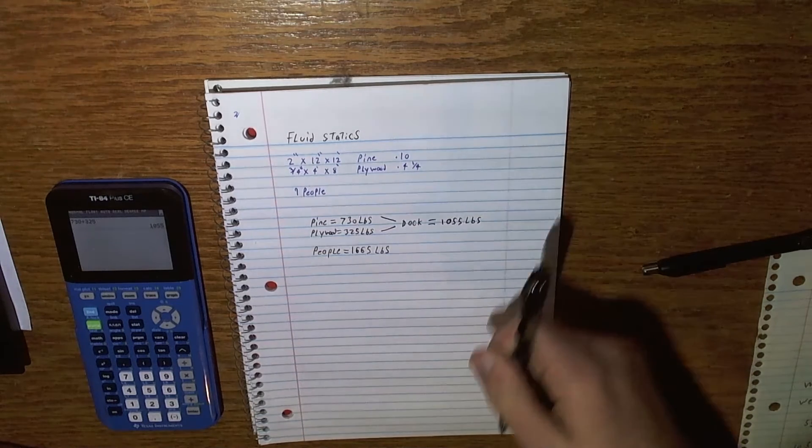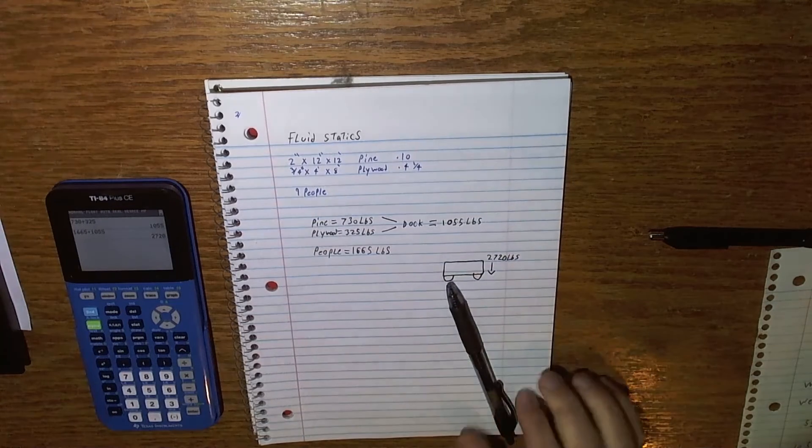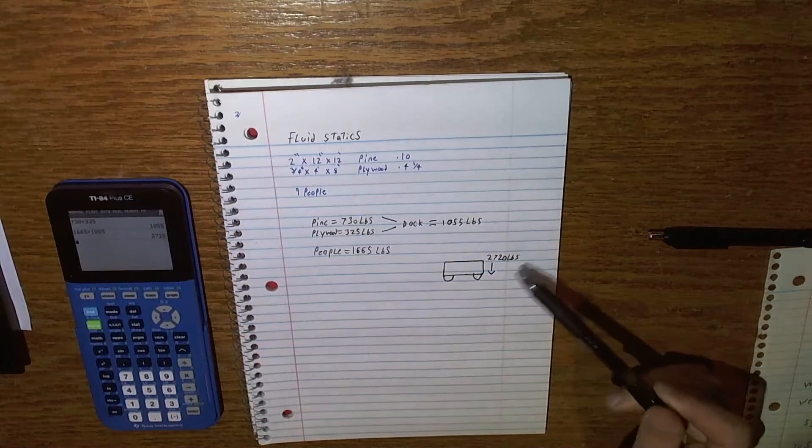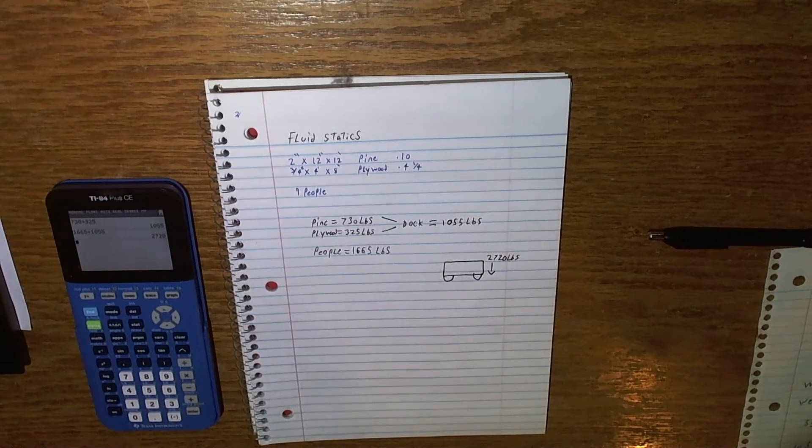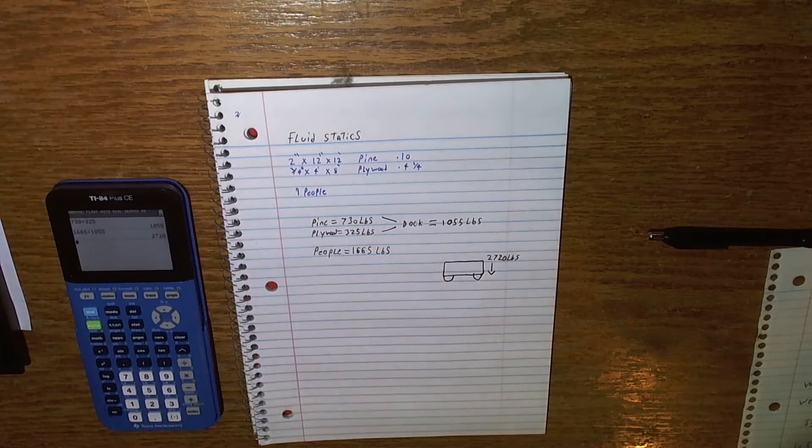And this is all weight going down. Now you're thinking, on this barge or dock, how does it float? What is keeping it up? Now if we know from Archimedes principle, the weight or buoyancy of something is equal to the water it displaces.